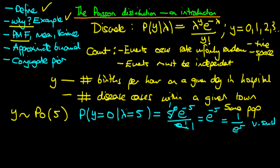That result makes sense: given that the mean number of disease cases in a particular year is five, it's very unlikely that a given town would have a count of zero — assuming events occur uniformly at random and independently. To calculate the probability of any arbitrary number of disease cases, we simply plug that value of y into our formula.